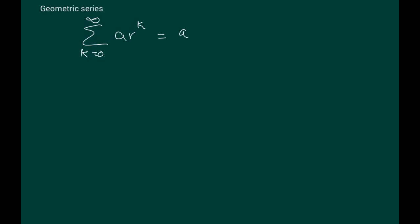If you look at it, it starts with k equals 0, so a plus a*r plus a*r squared plus a*r cubed and so on. This is the geometric series. The first term is a and the common ratio is r.